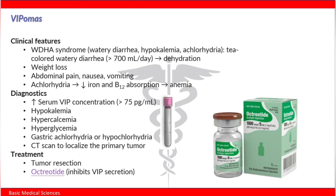Diagnostics: the patient will have increased serum VIP concentration, usually more than 75 picograms per mL. The patient will also have hypokalemia due to increased glycogenolysis — the breakdown of glycogen. Additionally, gastric achlorhydria or hypochlorhydria, which is decreased production of hydrochloric acid, will be present.